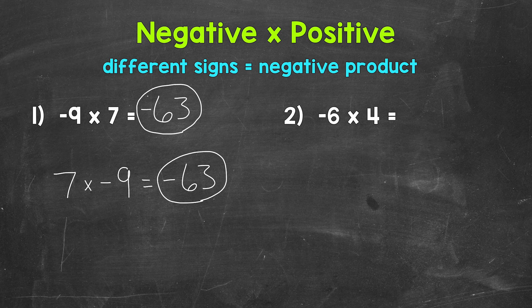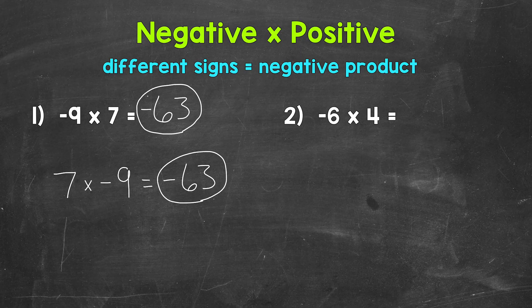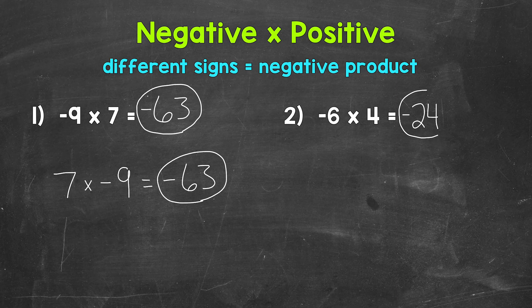Let's move on to number 2, where we have negative 6 times 4. A negative times a positive, so we have different signs. That's going to give us a negative product. We can think of this as 6 times 4, which is 24. And again, this is going to be negative. So negative 24.